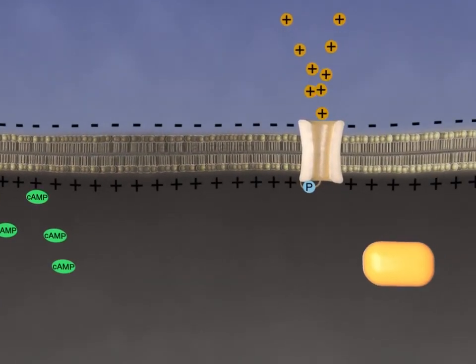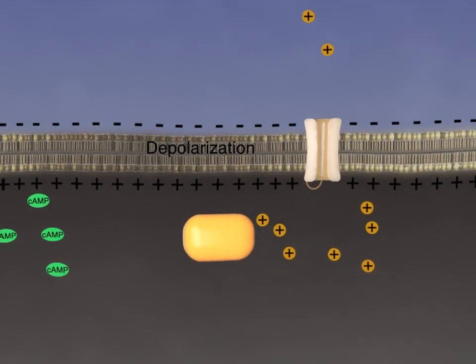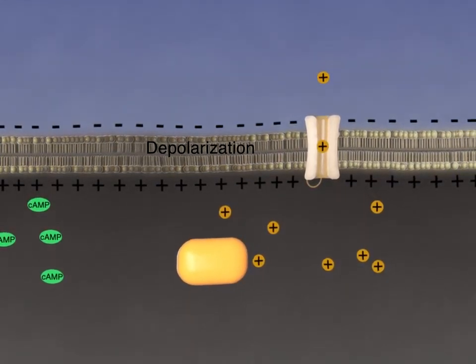This will stop the stimulation of PKA and all of the proteins phosphorylated by PKA will be dephosphorylated by phosphatases in the cell.